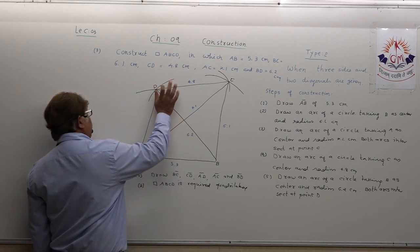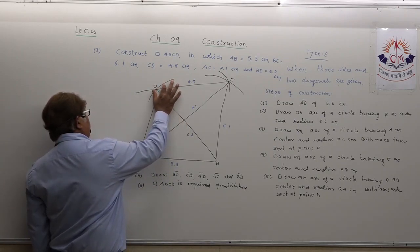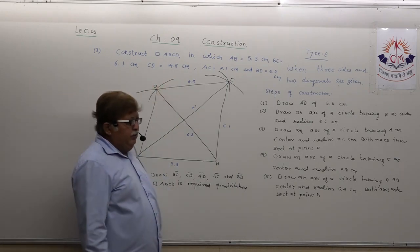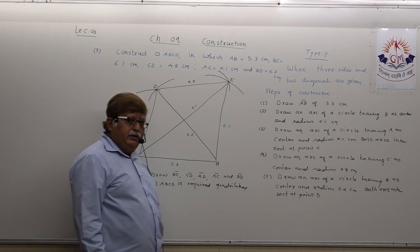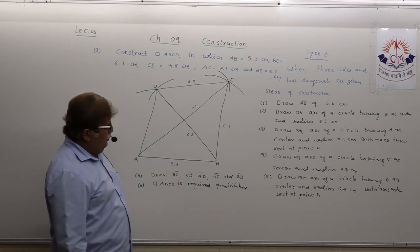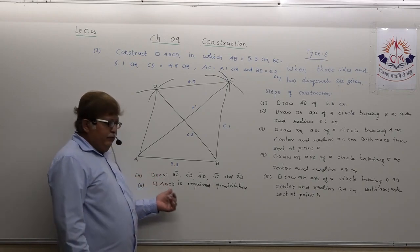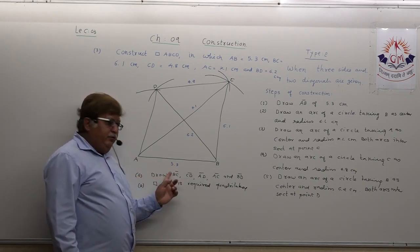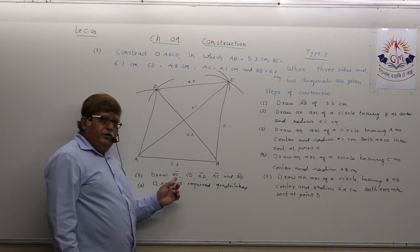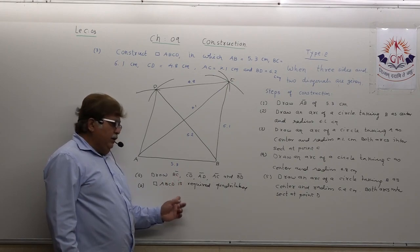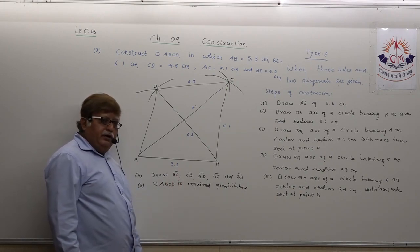Both arcs intersect at point D. At last, draw line segments BC, CD, AD, AC, and BD. Therefore, quadrilateral ABCD is the required quadrilateral. This is what we have done today as type 2 construction.